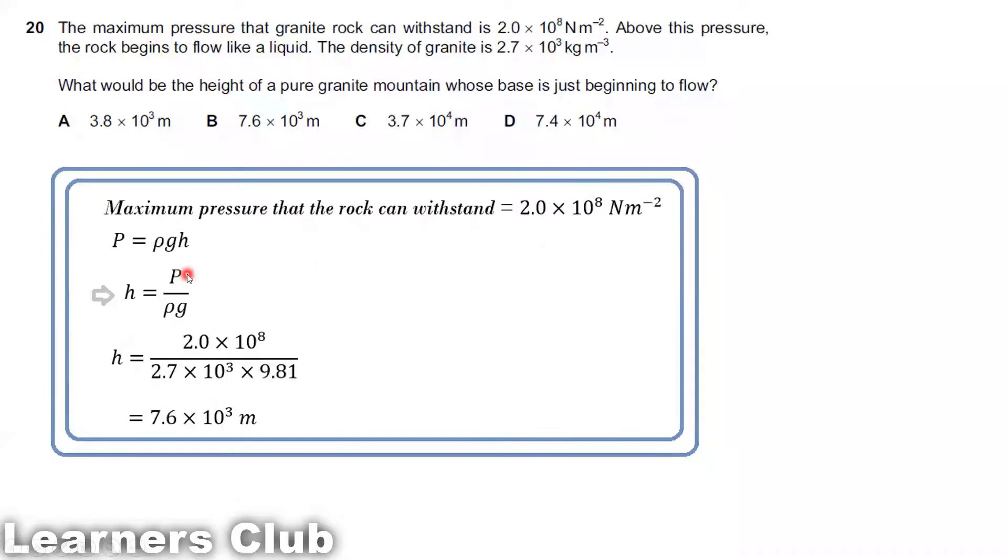The maximum pressure of the rock is 2.0 times 10 to the power 8, and after that it starts to flow. Pressure in a fluid is pressure equals rho gh. Rho is the density, acceleration due to gravity times the height. We need to find the height. Making height the subject, it becomes pressure over rho g. Pressure is 2.0 times 10 to the power 8. Density is given as 2.7 times 10 to the power 3. G is 9.81. Therefore height is 7.6 times 10 to the power 3 meters. The answer is option B.